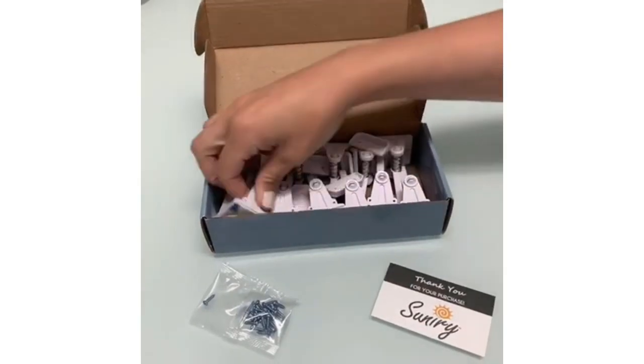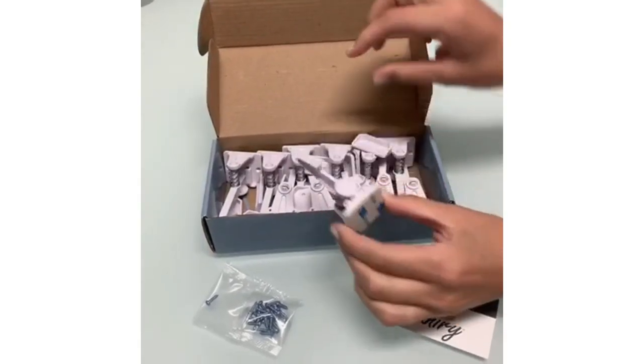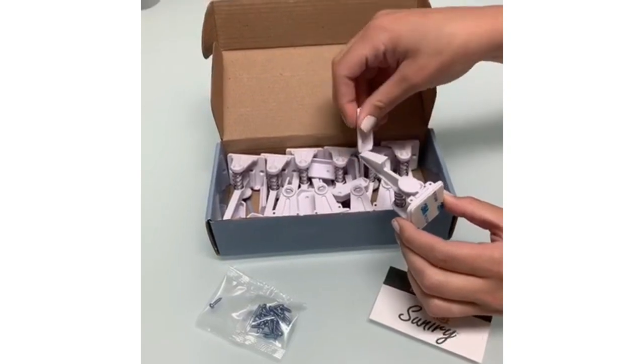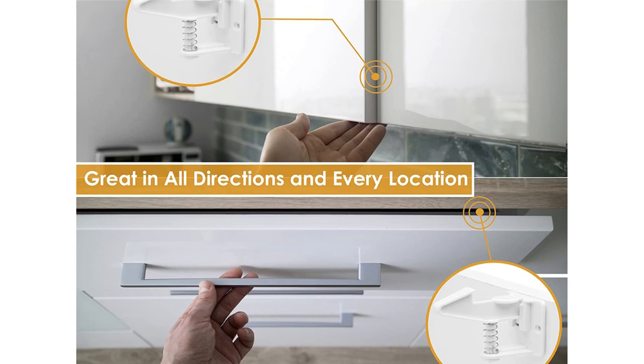Easy to install with no tools at all. Peel the film, stick it on and you're all set. If your drawer has something to hook on to, you don't even need to stick on the buckles. Supplied with catch and latch.